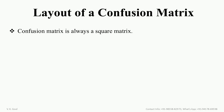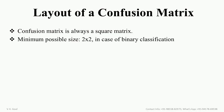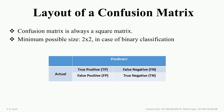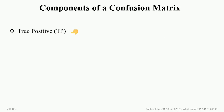A confusion matrix is always a square matrix. The number of classes determines the dimensions of a confusion matrix. Hence, it is obvious that the minimum size of a confusion matrix is 2 by 2, as in the case of binary classification. A typical confusion matrix has 4 main components. The first one is true positive, abbreviated as TP.